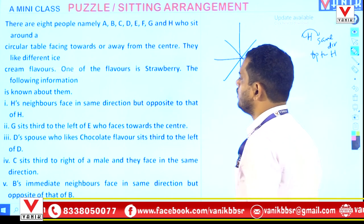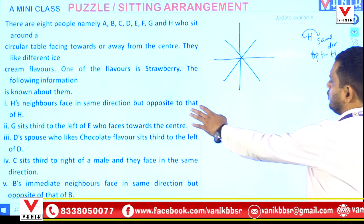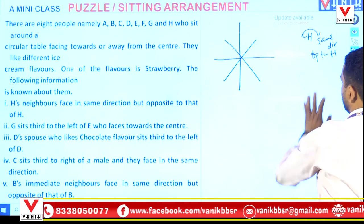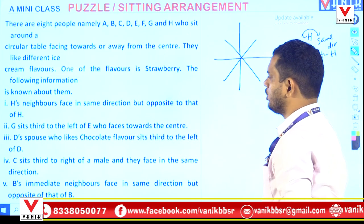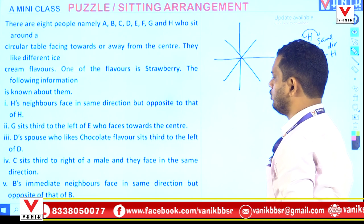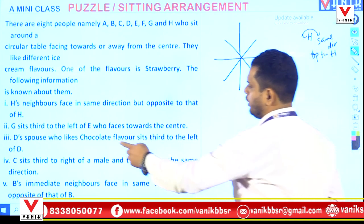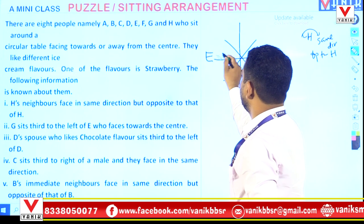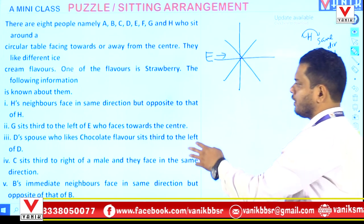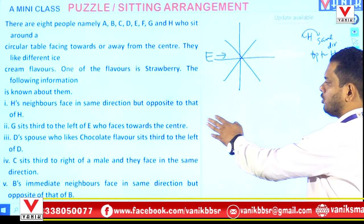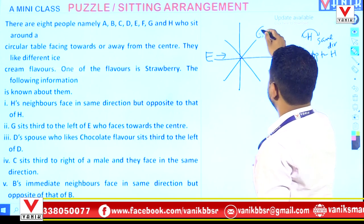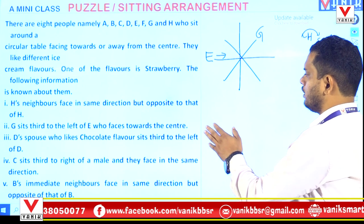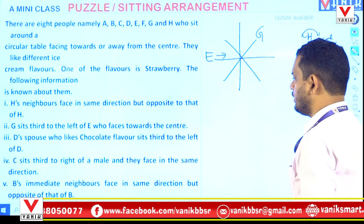This is only raw work. For condition 2: H is to the left of E, who faces towards the center — so I am taking E as inside. Then G is third to the left of E, so we place G over here. No problem with that.